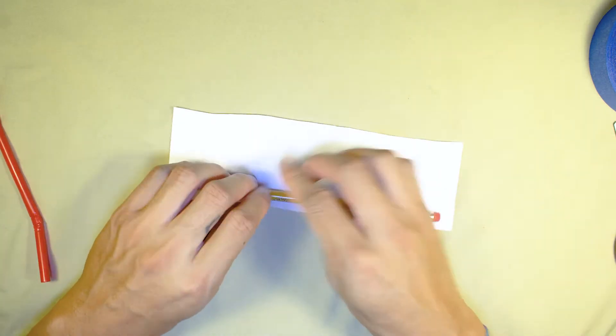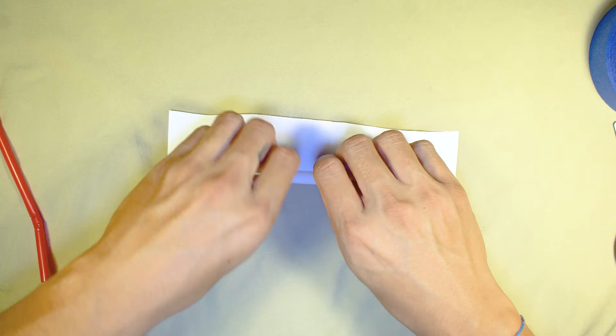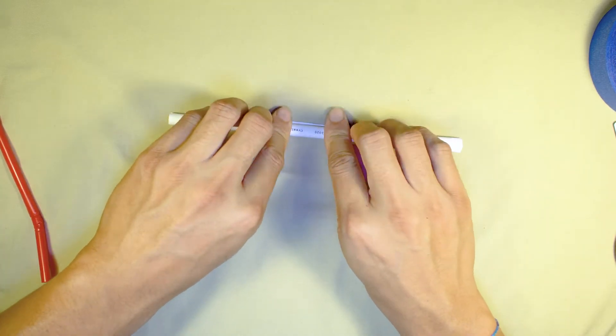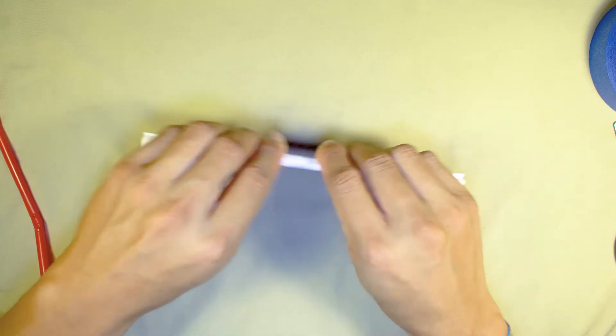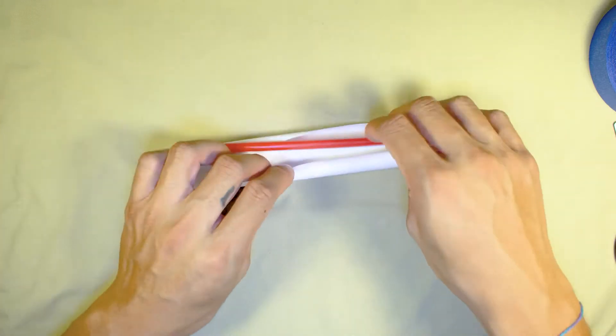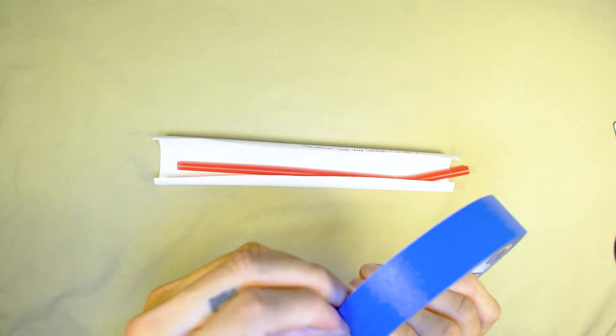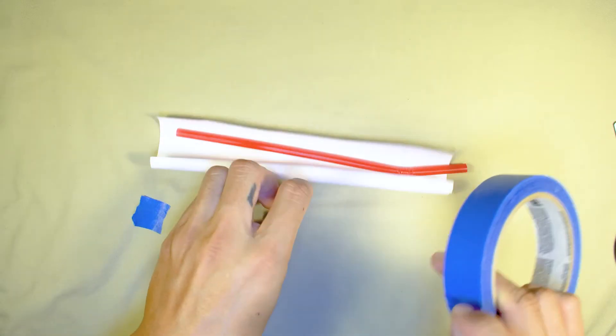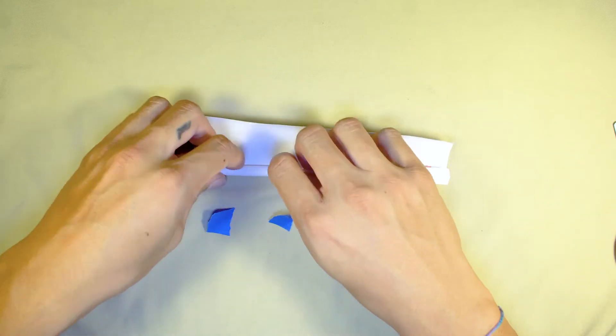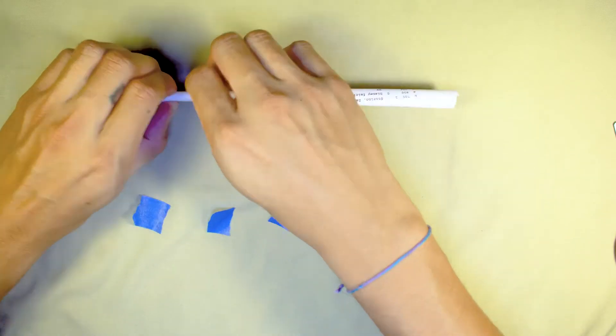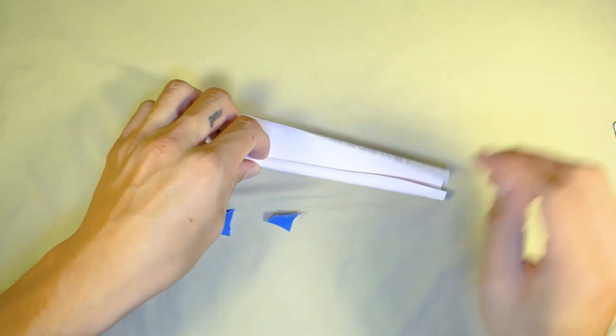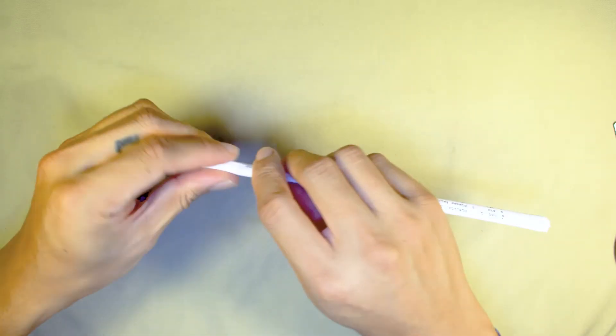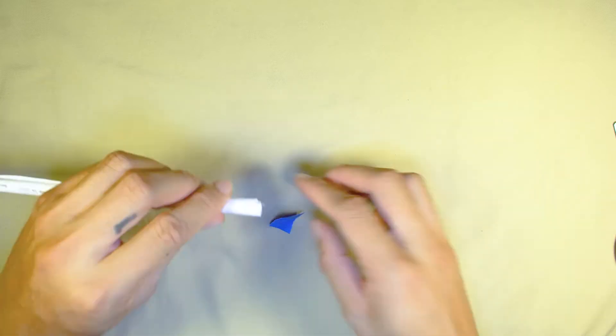Next, roll the strip around the pencil to form it. Tape both ends to keep its form.